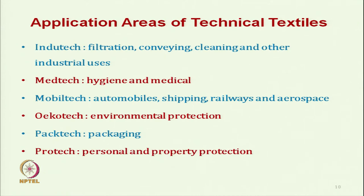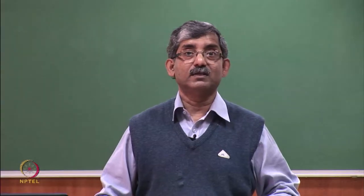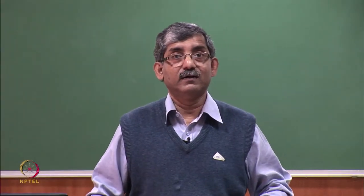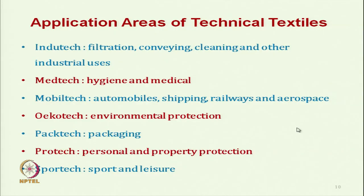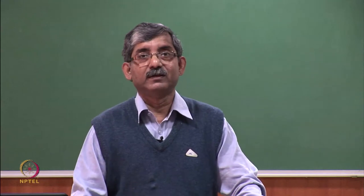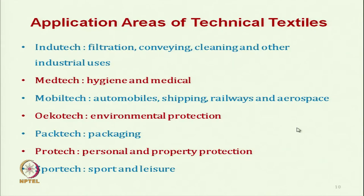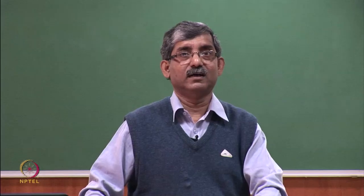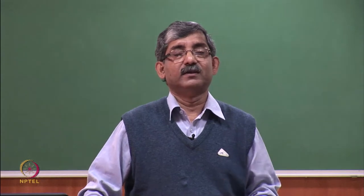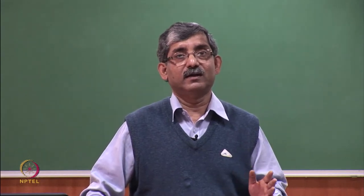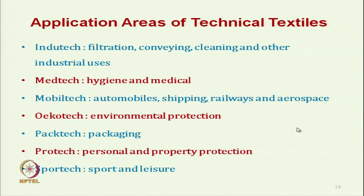Protech covers personal and property protection like extreme heat or fire protective clothing and extreme cold protective clothing. Sporttech covers sports and leisure wear. These are the 12 areas into which technical textiles are divided based on areas of application.